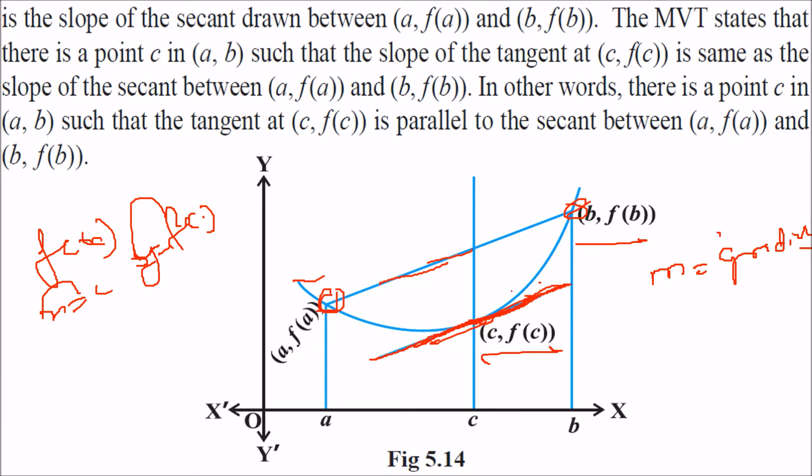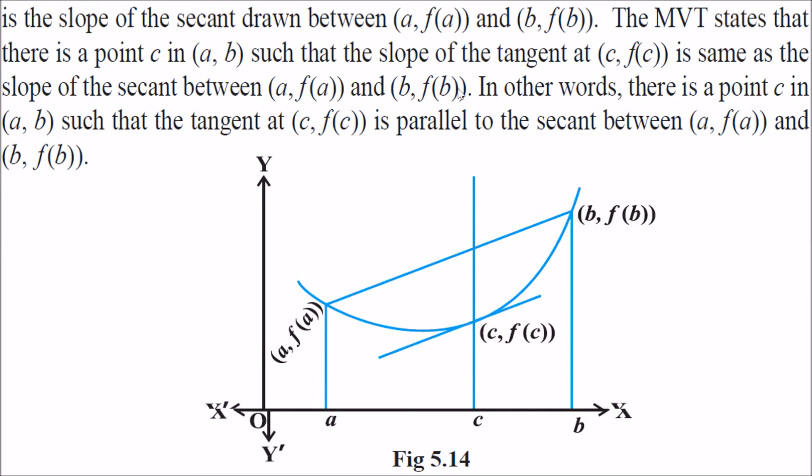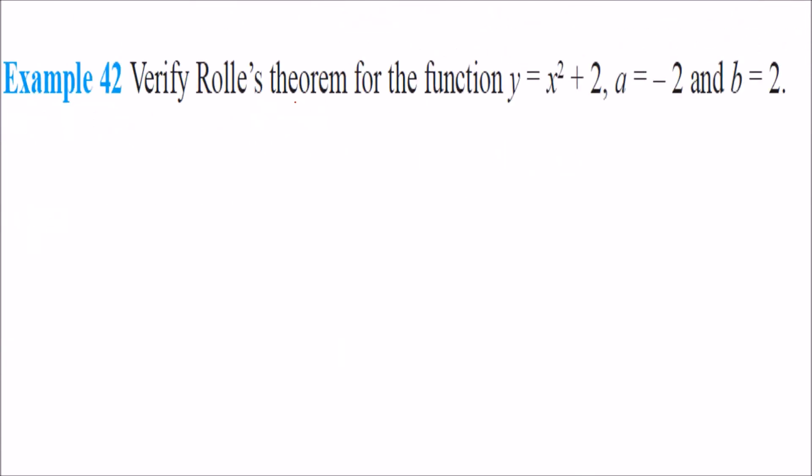When these two are parallel, you will find a line parallel to the line joining these two points. And what is the slope of this line? This is x1, x2. This is y1, y2. So the slope of line is nothing but (y2 minus y1) by (x2 minus x1). So this will be (f(b) minus f(a)) by (b minus a). This is the slope, f dash c.